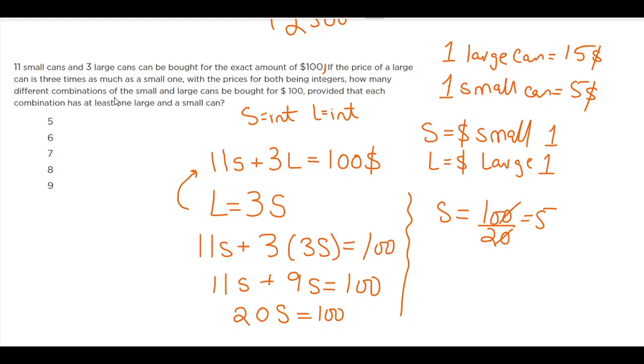How many different combinations of small and large cans can be bought for hundred dollars, provided that each combination has at least one large and one small can? So I think I need to modify my equation a little bit.